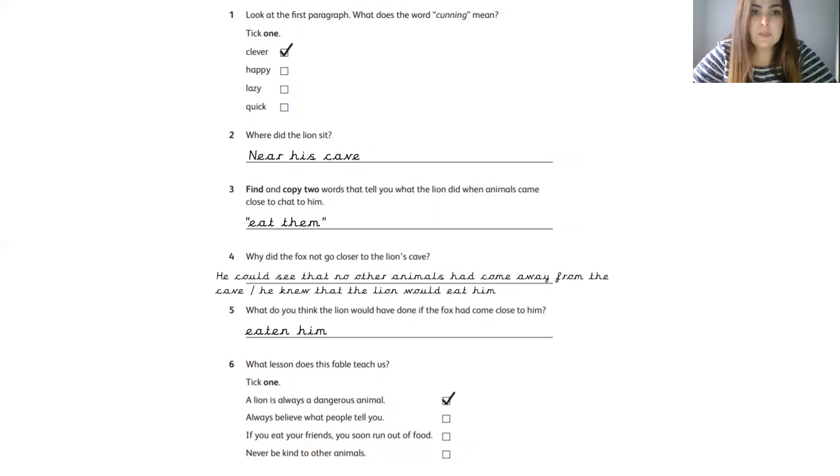Question number one. Look at the first paragraph. What does the word cunning mean? Tick one. Look at that word in bold. You just need to tick one of the options below. And the best way to answer this is by using what we call the process of elimination. Get rid of the ones you know it's not. Give yourself a mark if you put a tick next to clever.